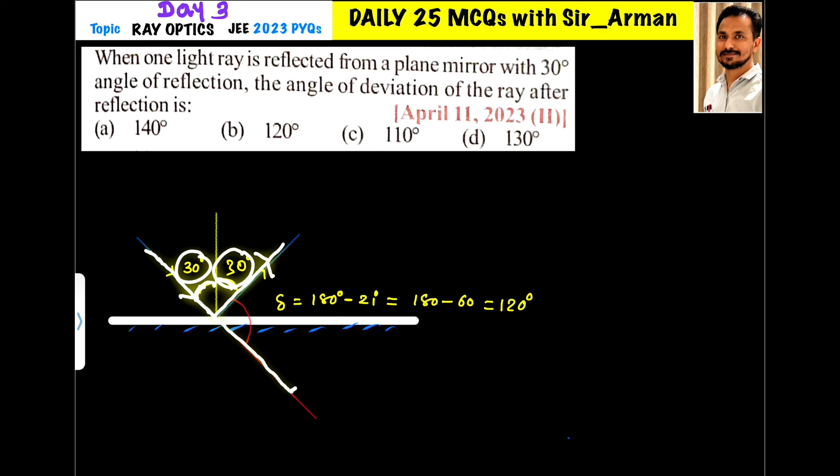The ray was actually going in this direction and it is deviated in a clockwise-anticlockwise manner like this. So what is the deviation produced? The total angle is 180 minus 60, so it is 120.